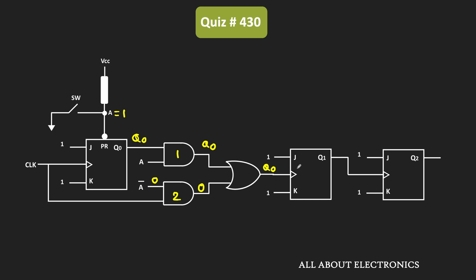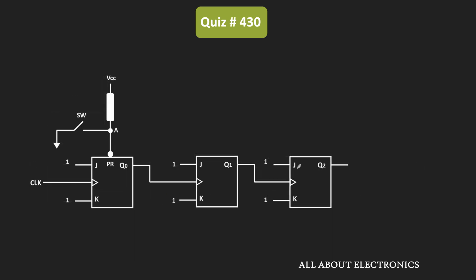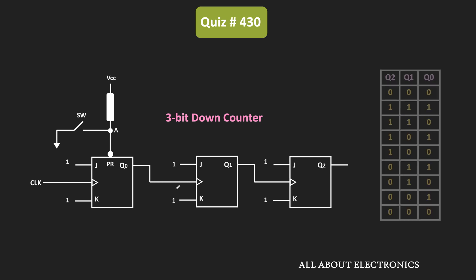That means whenever this switch is in the open condition, then the Q0 output will get connected to the clock input of the next flip-flop. And if we see the equivalent circuit, the output of the JK flip-flop is connected to the clock input of the next stage. Here all the JK flip-flops are the positive edge-triggered flip-flops. That means this 3-bit counter will act as a down counter, counting from 111 to 000. In other words, when this switch is in the open condition, it will count both odd and even numbers.